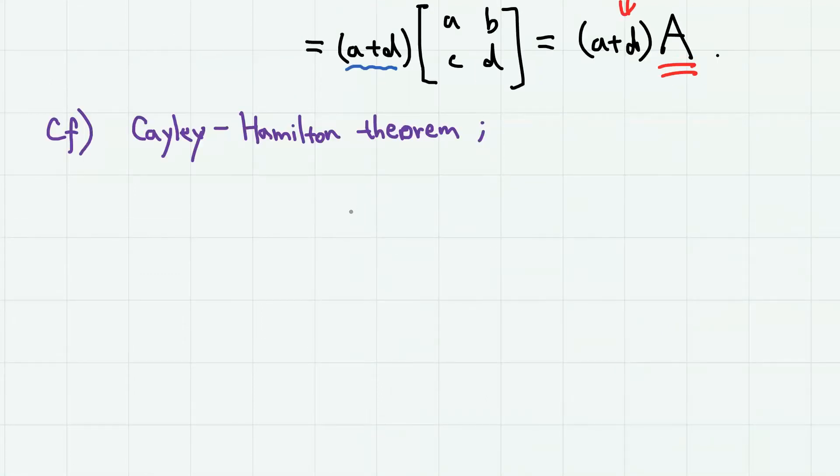We can obtain the same result using the Cayley-Hamilton theorem. The Cayley-Hamilton theorem for two-dimensional matrix is A squared minus A plus D times A plus AD minus BC times I equals 0 matrix, where this I is the identity matrix.